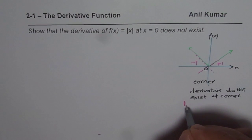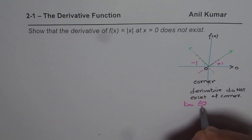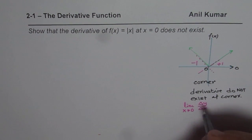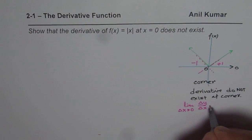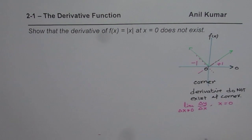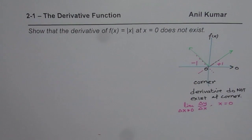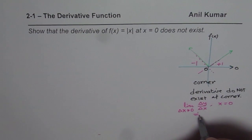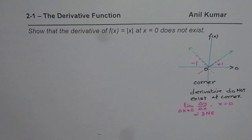So we say that the limit of delta y over delta x as delta x approaches 0, at x equals to 0, does not exist. Since from the left side it is minus 1 and from the right side it is plus 1, this limit does not exist. Therefore, we say that the tangent does not exist.